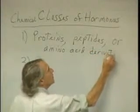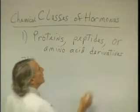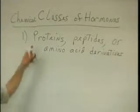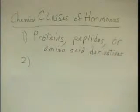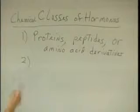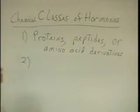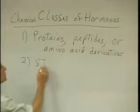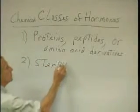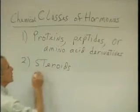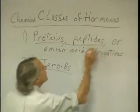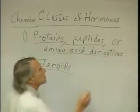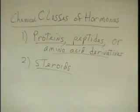So I'm categorizing proteins, peptides, and amino acid derivatives all into one category. You might find a textbook that splits these into two different categories. The other category is steroids. What kind of molecule is a steroid? Steroids are lipid derivatives.